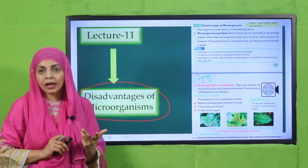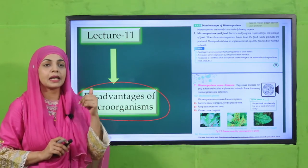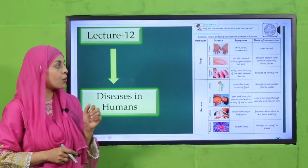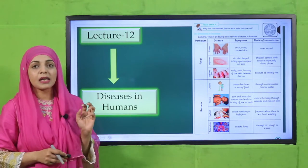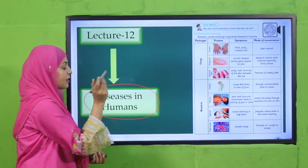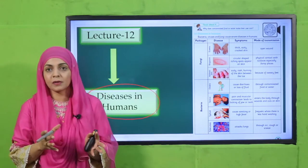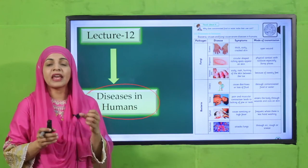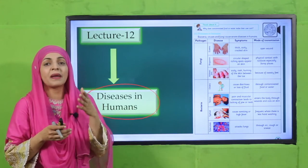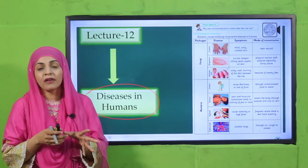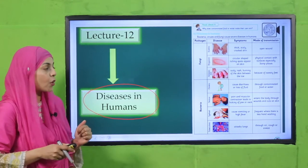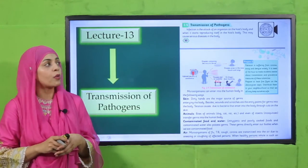Then in lecture number twelve, we will discuss about the diseases in humans which are caused by different microorganisms. Human beings get ill, and we will cover what the different diseases are which are caused by bacteria and viruses in human beings. This will be discussed in lecture number twelve.